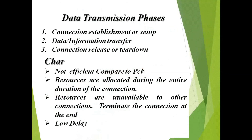Whenever data transmission takes place in circuit switching, there are three important phases. The first is connection establishment or setup — creating the connection from source to destination. The second phase is data or information transfer — once the connection is established, data is transferred. The third phase is connection release or teardown — once data transfer is complete, the connection is released from the source switching center to the destination switching center.